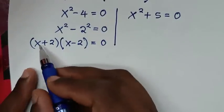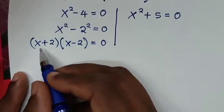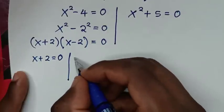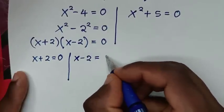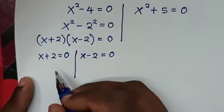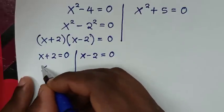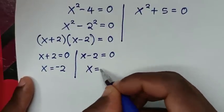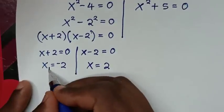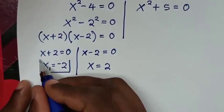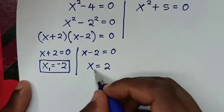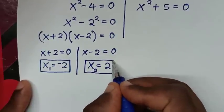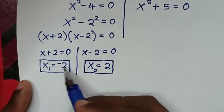From here we get two solutions: x + 2 = 0 gives x = -2, and x - 2 = 0 gives x = 2. Therefore x = -2 is the first value and x = 2 is the second value. These are the real values of x.